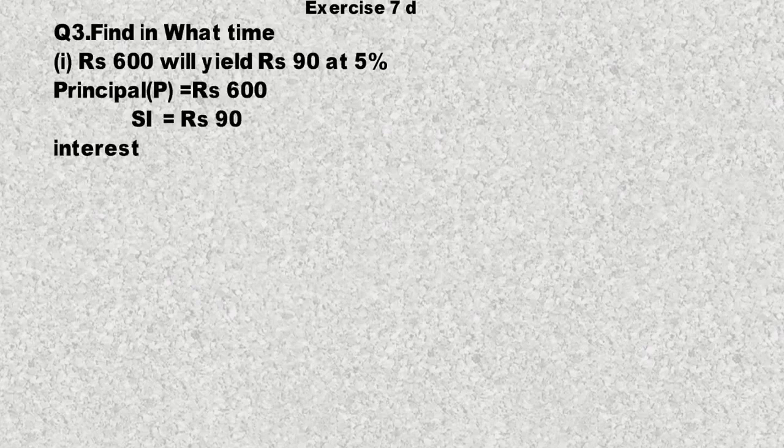Exercise 7D, Question number 3, Part number 1. Find in what time 600 rupees will yield 90 rupees at 5% per annum.